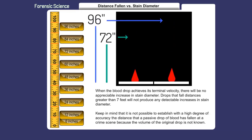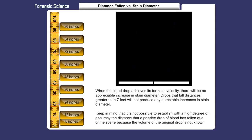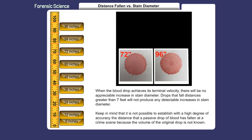When the blood droplet achieves its terminal velocity, there will be no appreciable increase in stain diameter. Drops that fall distances greater than 7 feet will not produce any detectable increases in stain diameter.